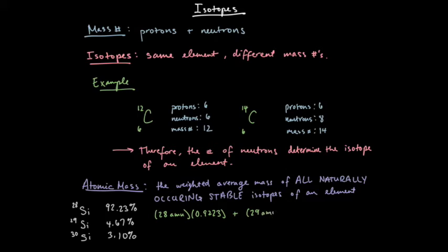So, here we have three naturally occurring stable isotopes of silicon, 28, 29, and 30. And here are their percentage of abundance. And so, what you do, you multiply each of these mass numbers by their percent abundance, and then you add them up as such to get your atomic mass.